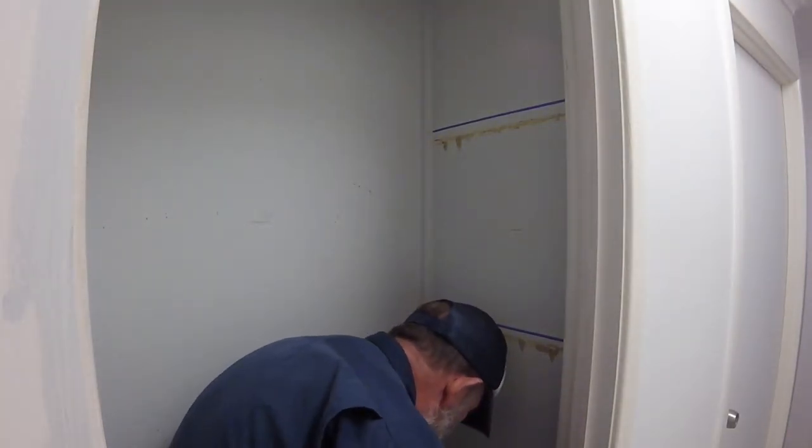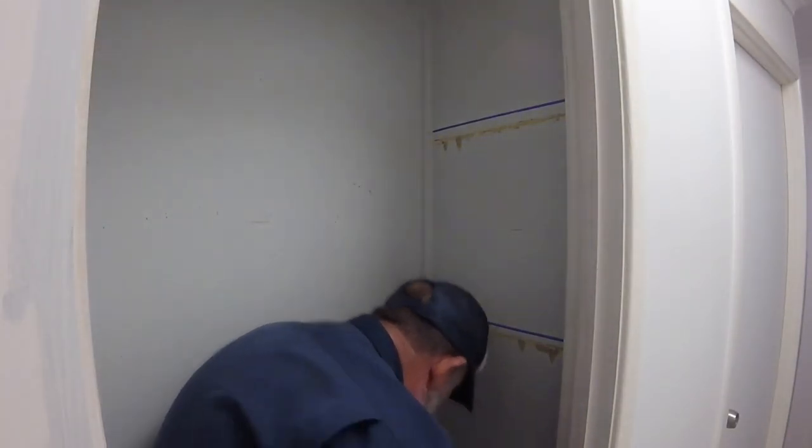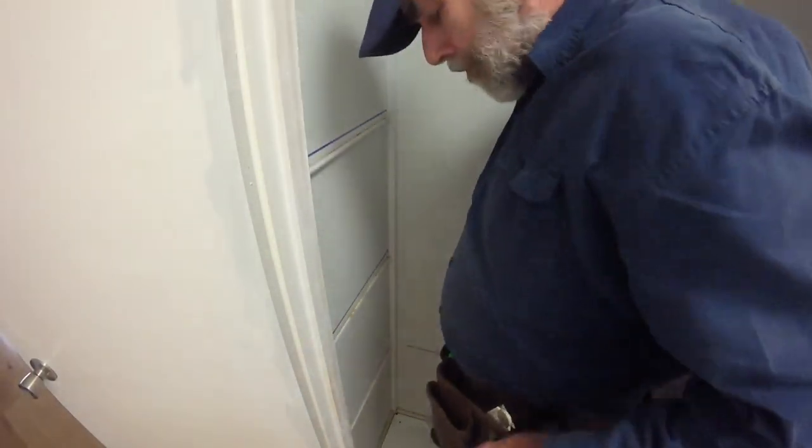The wall sheeting is gyprock or plasterboard or drywall depending on where you are and removing the supports also takes some of the cardboard outer layer with it.